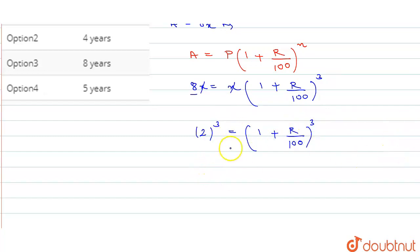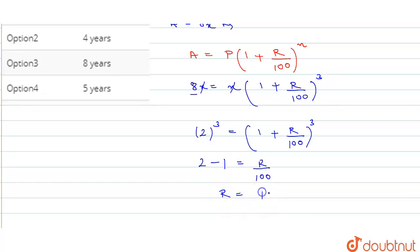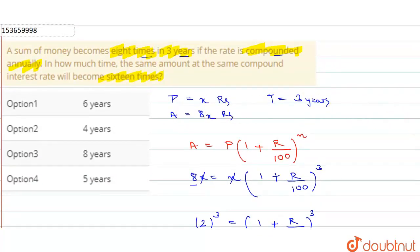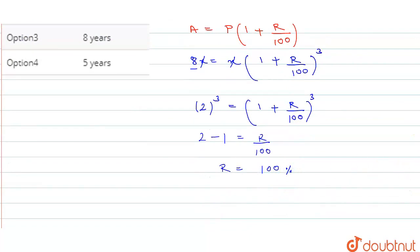The cube cancels with the cube. So equating both sides, 2 equals 1 + rate of interest / 100. Therefore rate of interest / 100 equals 2 minus 1 = 1, so rate of interest equals 1 × 100 = 100. So the rate of interest is 100%.